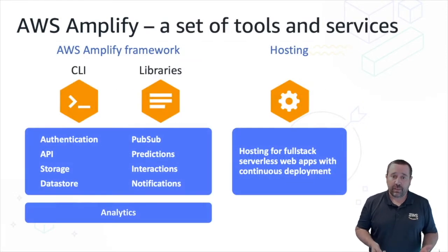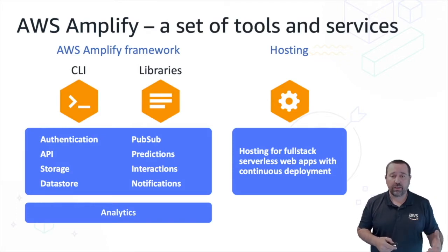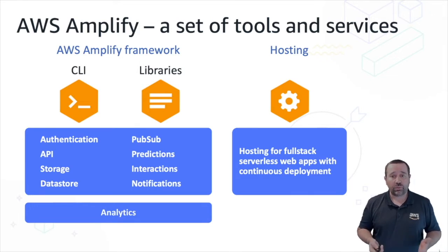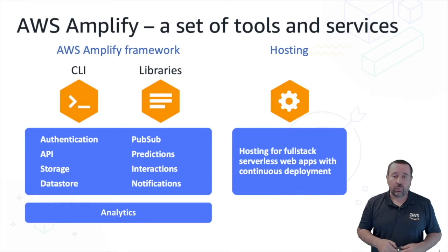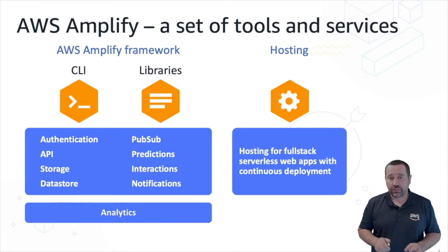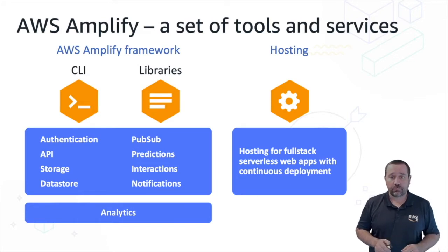So what's Amplify made up of? There are several parts to it. First, we have the CLI. The CLI is there to help you set up and update your application as you're developing. It walks you through the process of adding and integrating AWS cloud services into your apps. We also have the open-source libraries for JavaScript, Swift, Kotlin, and other languages, which encapsulate functionality for useful patterns for things like authentication, APIs, or data storage. These libraries go hand-in-hand with our CLI.